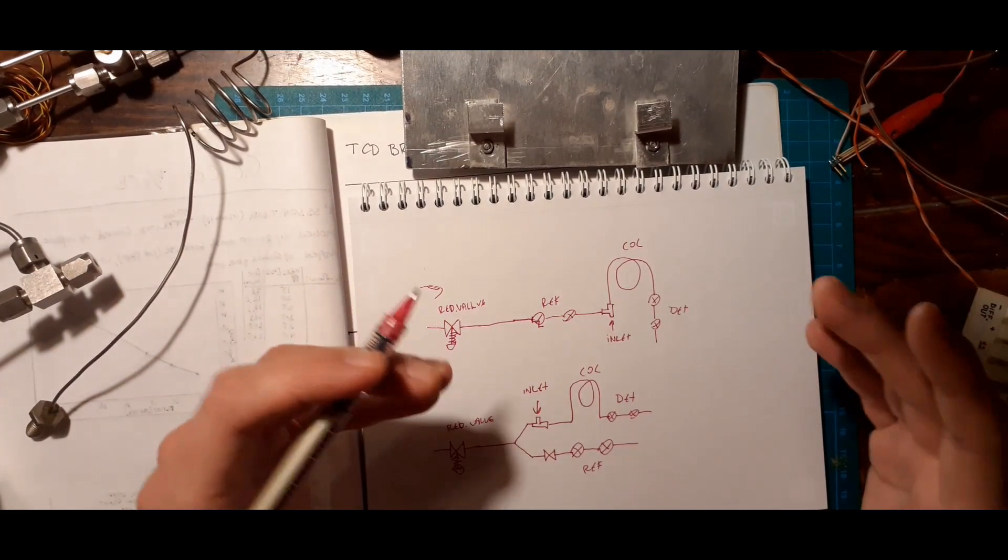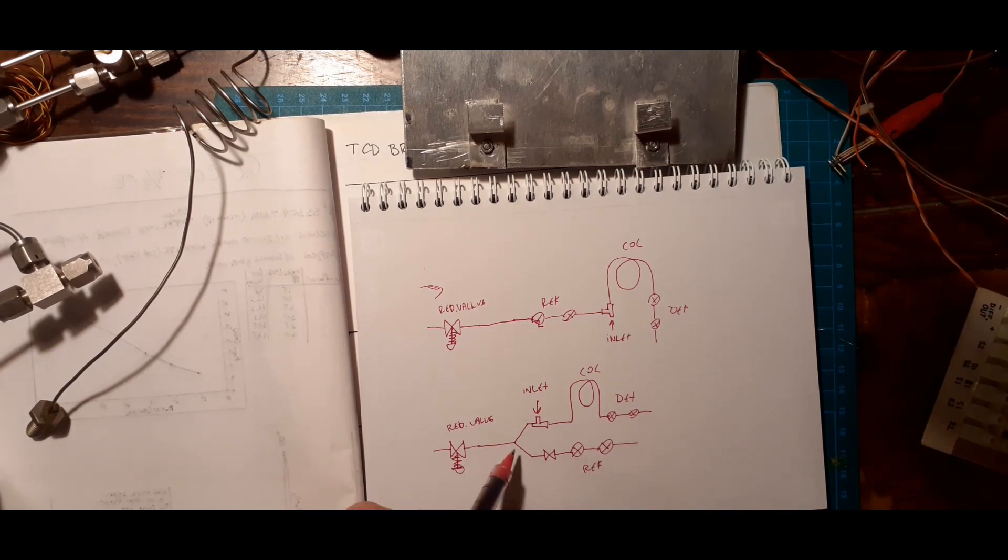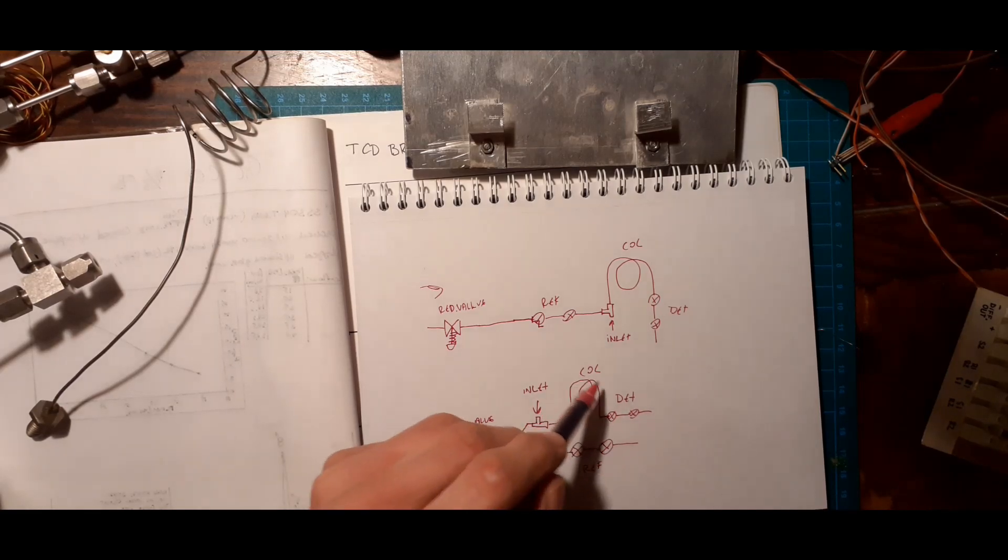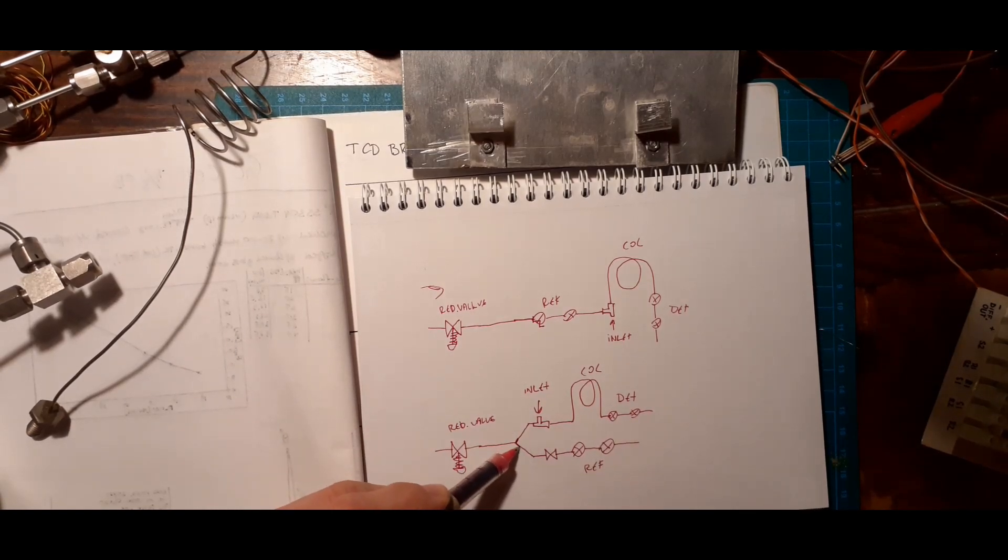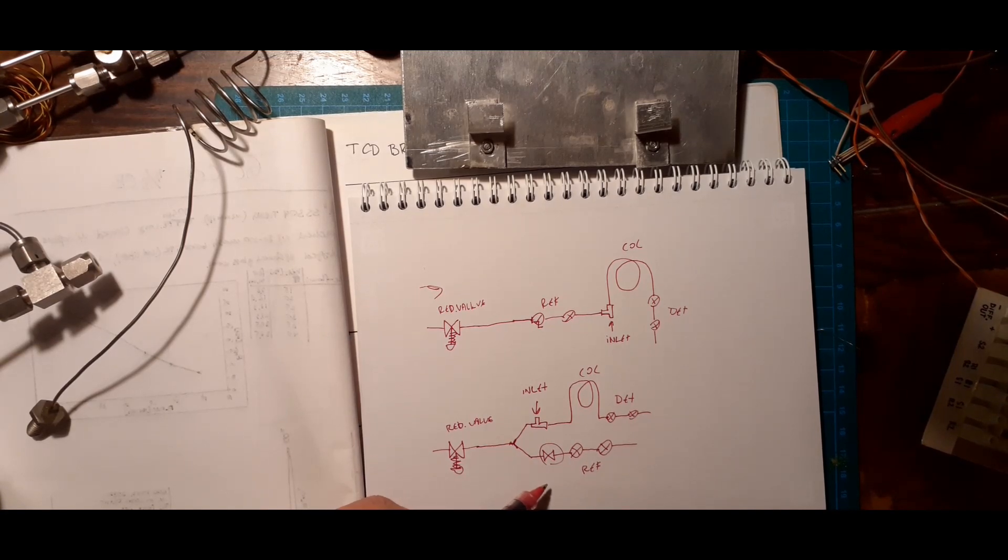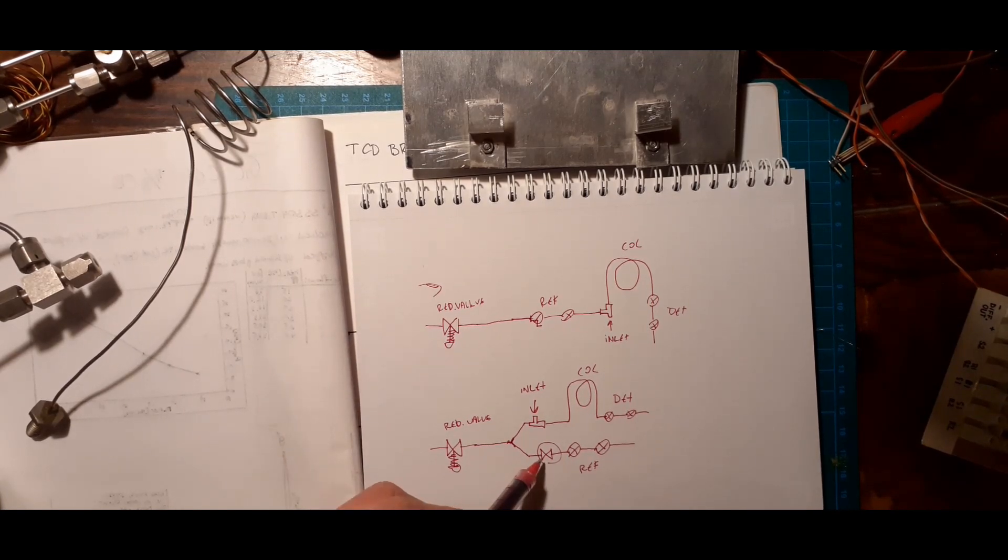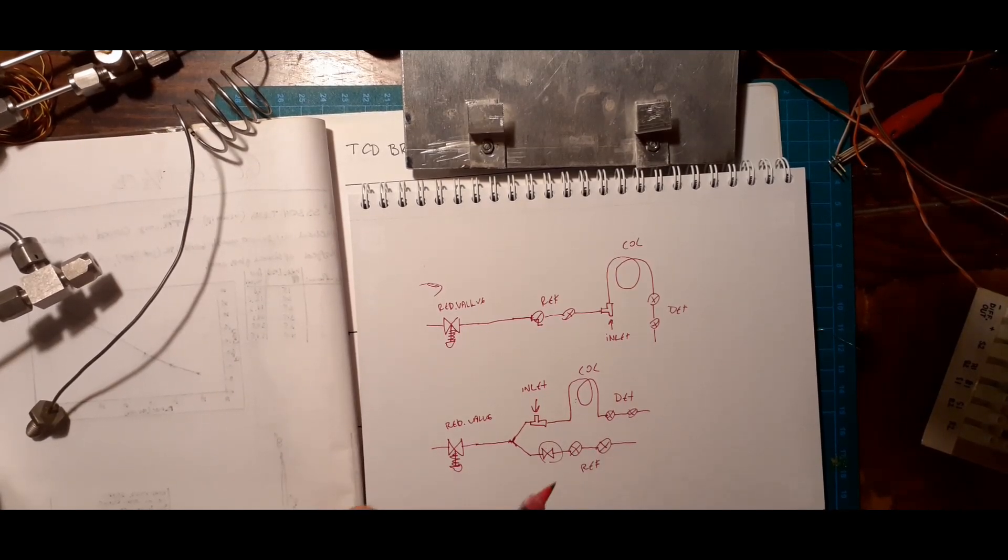Now the other way of doing it, and I've seen this implemented too, is that you can have from your tank pressure, or your reduced tank pressure, your carrier pressure, you can have a split where one side goes to your inlet and your column, and then the detecting side, and then you have this Y-split before here, where the other side goes through some kind of flow restriction, and to the reference side. Ideally this would be an identical column to your column.